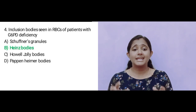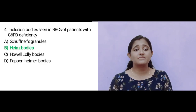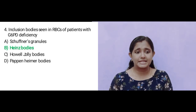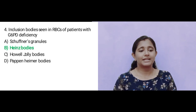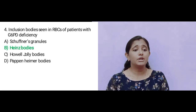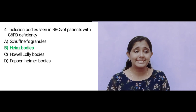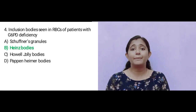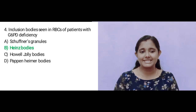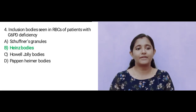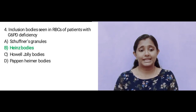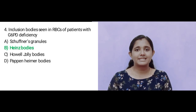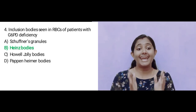Question number 4: Inclusion bodies seen in RBCs of patients with G6PD deficiency — glucose-6-phosphate dehydrogenase deficiency. Option A: Schüffner's granules. Option B: Heinz bodies. Option C: Howell-Jolly bodies. Option D: Pappenheimer bodies. The answer is Option B: Heinz bodies.